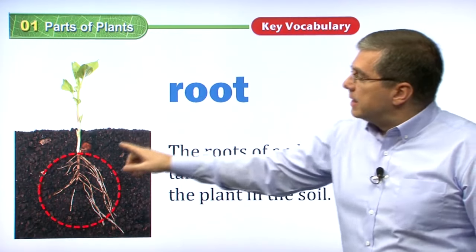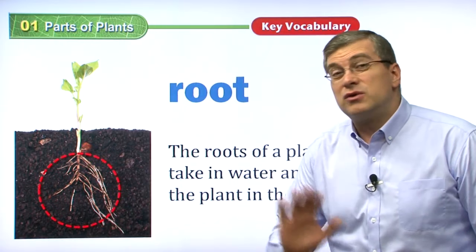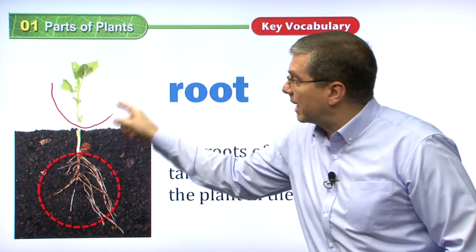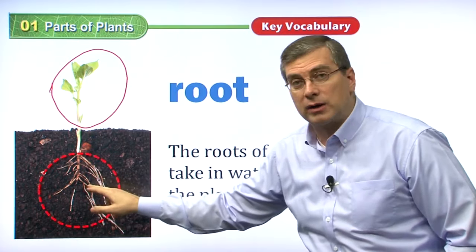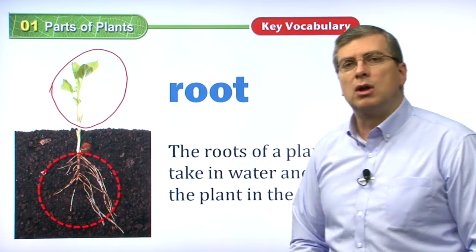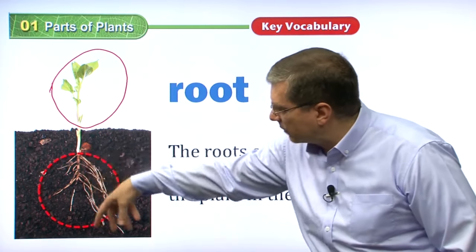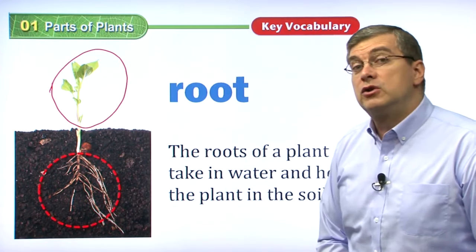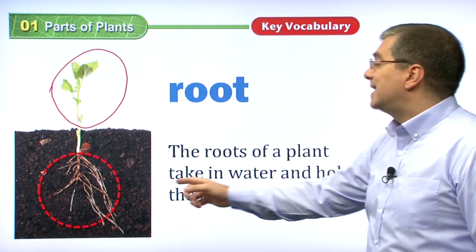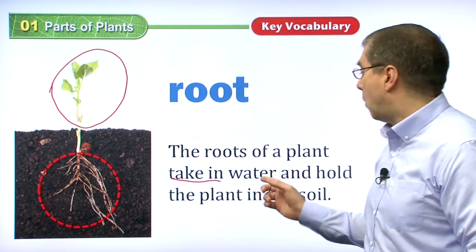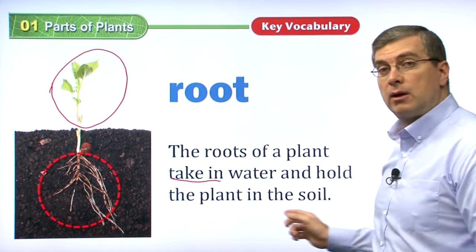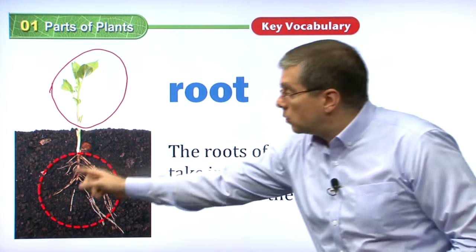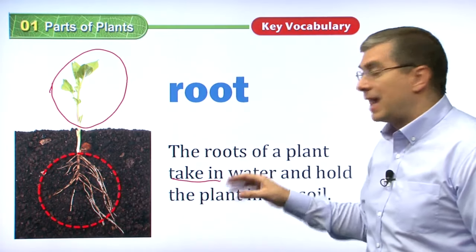Here we have the root. This is the part of the plant that you normally don't see — it's in the ground. In the previous picture we only saw the above-ground part of the plant, but we didn't see this part. These are the roots, and these are typical-looking roots for a plant. They have many different parts or arms going into the ground. The roots of a plant take in water and hold the plant in the soil.